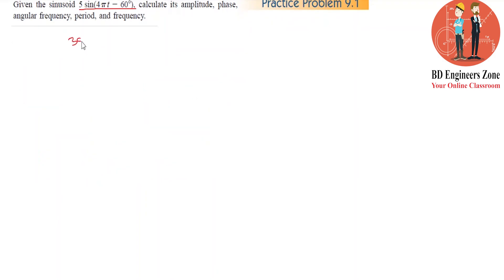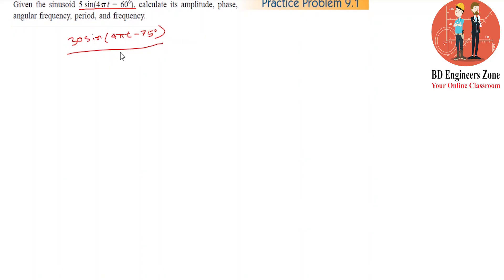Now for the next part: 30 sin(4πt minus 75 degrees). We are changing the data and working through this new sinusoid.